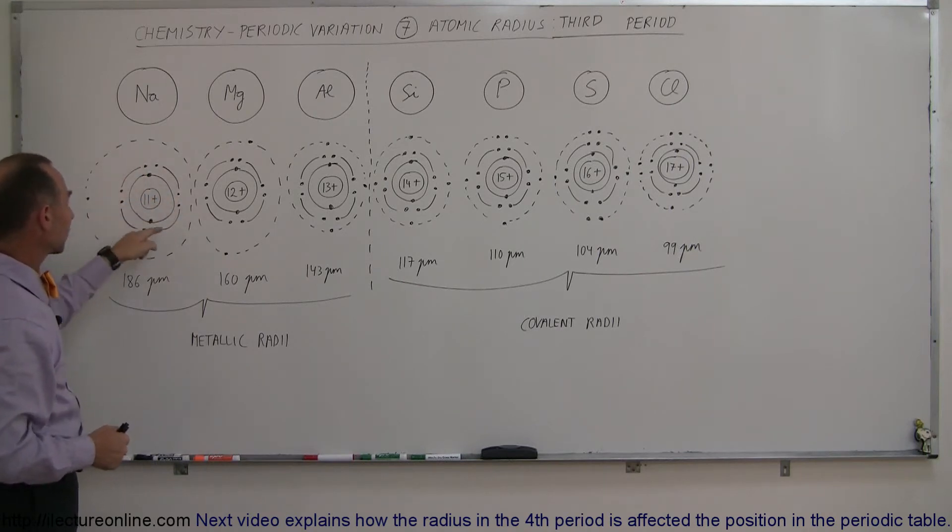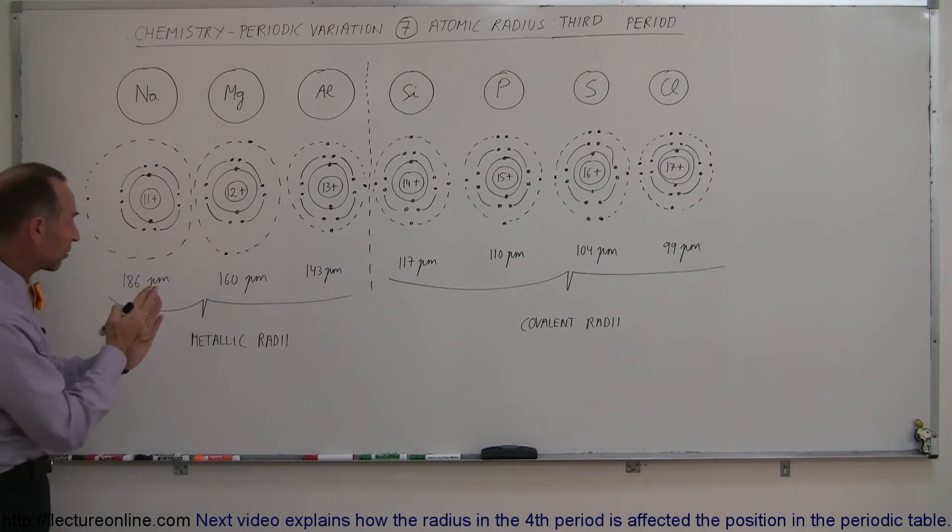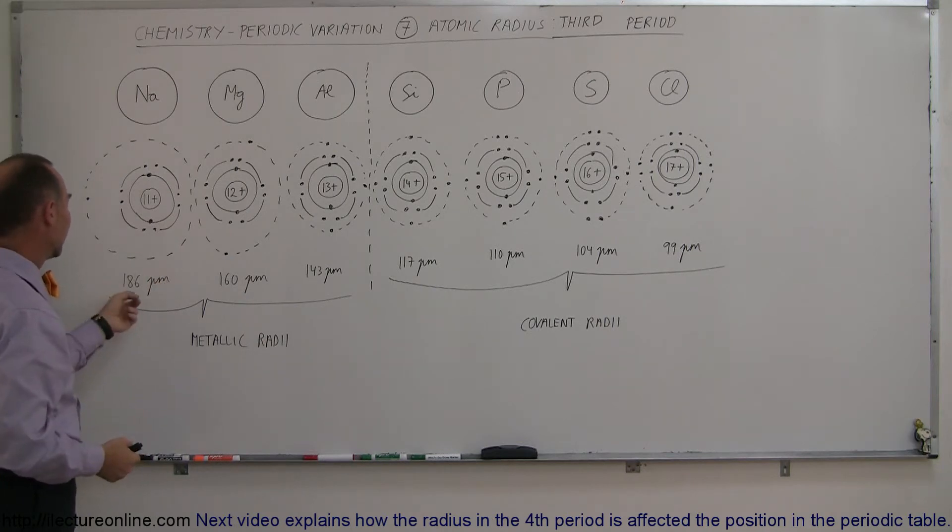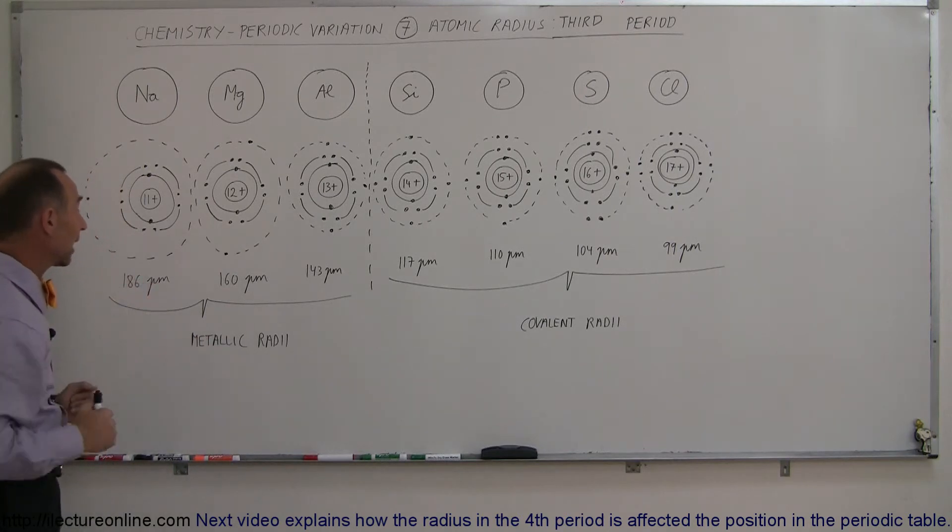Since the inner ten electrons screen the nucleus for the eleventh electron, there's not as much force of attraction between the eleven protons in the nucleus and that eleventh electron. Therefore that electron resides quite a bit away from the nucleus forming a fairly large atom. The radius there is 186 picometers which is almost four times the Bohr radius, so it's a large atom.